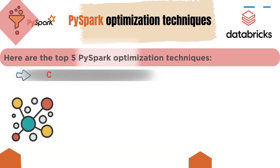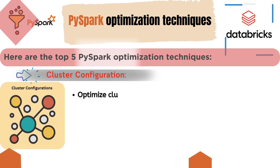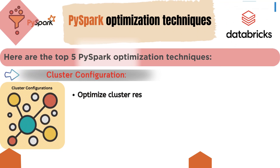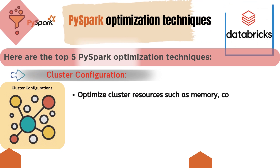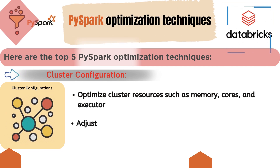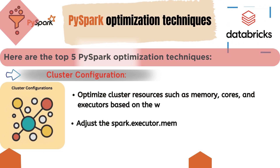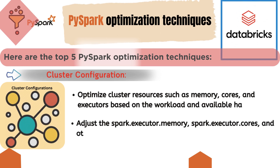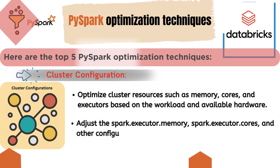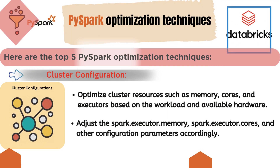Fifth, cluster configuration. Optimize cluster resources such as memory, cores, and executors based on the workload and available hardware. Adjust spark.executor.memory, spark.executor.cores, and other configuration parameters accordingly.